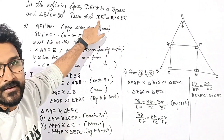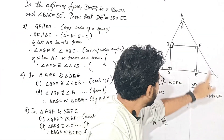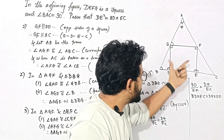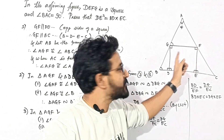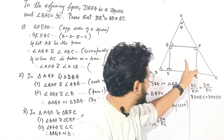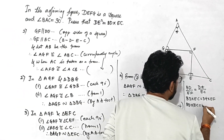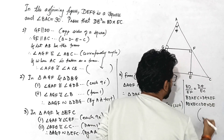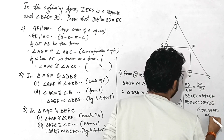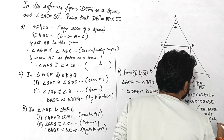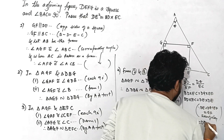The LHS is BD into EC, and the RHS is DG into EF. But since DG equals EF — they are sides of a square, and all sides of a square are equal — we know DG equals EF equals DE. Therefore BD into EC equals DE into DE, which is DE squared.